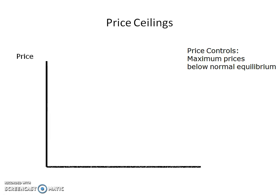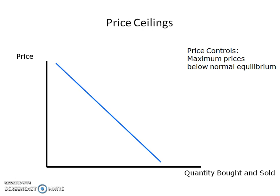We're going to start by taking a look at our classic supply and demand graph — the market — where we have an equilibrium price of $10 and an equilibrium quantity of 100.